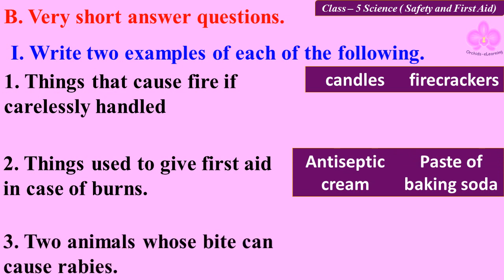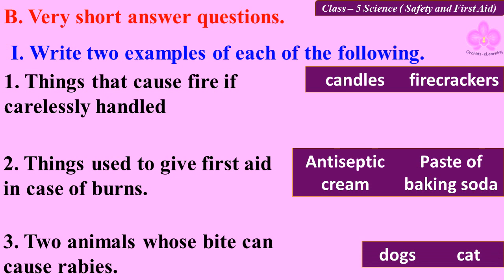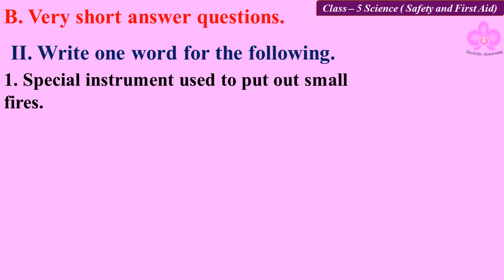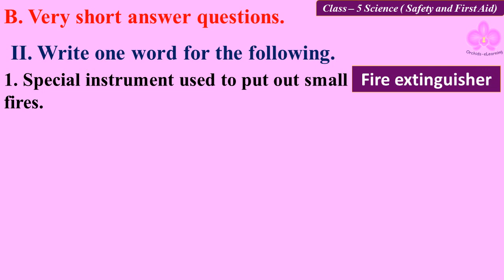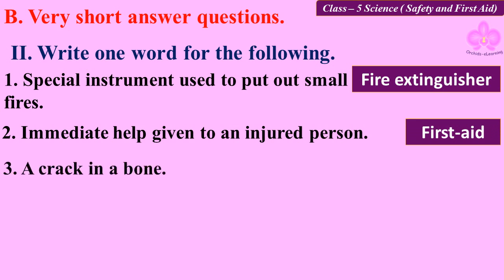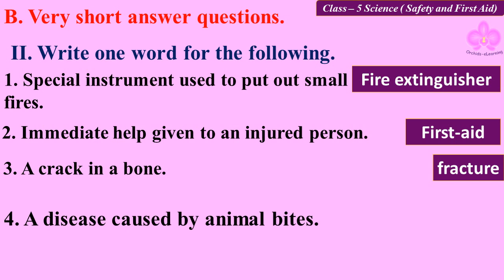Two animals whose bite can cause rabies: dogs, cat. Write one word for the following: special instrument used to put out small fires — fire extinguisher; immediate help given to an injured person — first aid; a crack in a bone — fracture; a disease caused by animal bites — rabies.